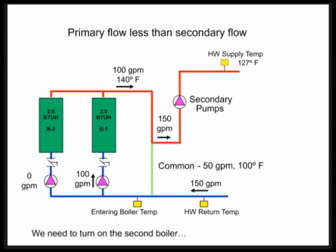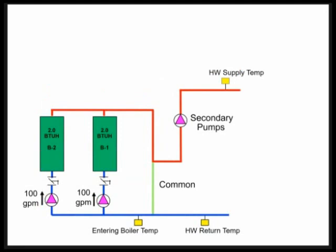This is also why in primary secondary, we like to see our boilers looking at the secondary loop supply, this 127 degrees area right here, so that we know when it's time to bring on another boiler. When the secondary flow is greater than the primary flow, the supply water temperature will drop. So we don't typically operate there. That just tells us we need to turn on that second boiler.